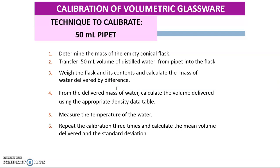It does not want the mass of the empty conical flask. So again, you should know how to use the balance and subtract the mass of the empty conical flask. From the delivered mass of water, you need to calculate the volume delivered using the appropriate density table. Measure the temperature of the water, then repeat the calculation three times and calculate the mean volume delivered and the standard deviation.